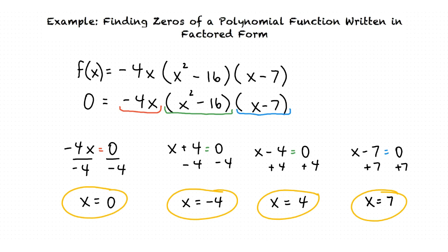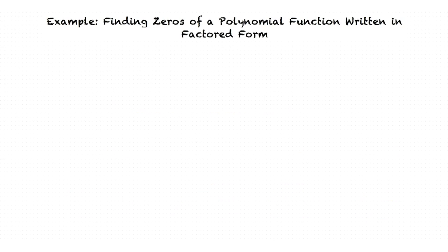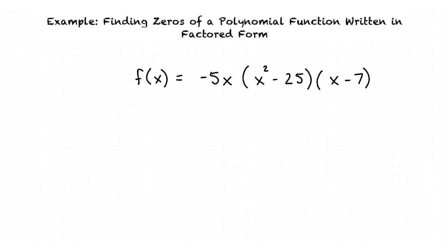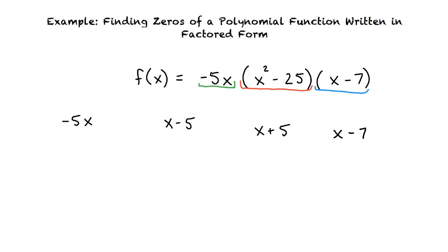Let's move on to our next example problem. We are given f of x equals negative 5x times the quantity x squared minus 25 times the quantity x minus 7. We begin by making sure that each polynomial is completely factored. x squared minus 25 can be factored further into x plus 5 and x minus 5. There are no other polynomials that can be factored further, so now we can set each factor equal to 0.